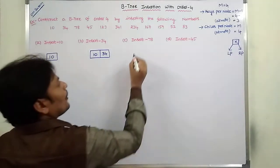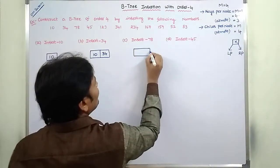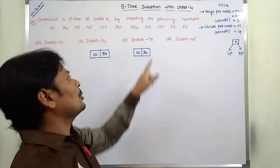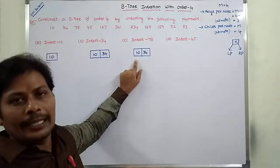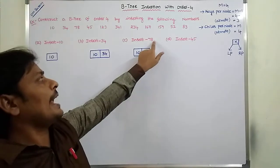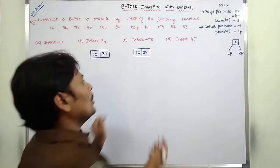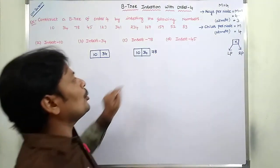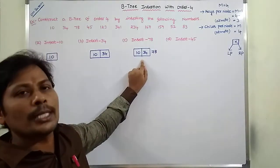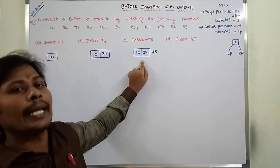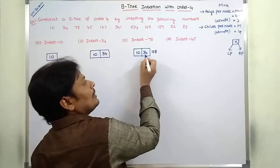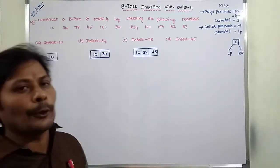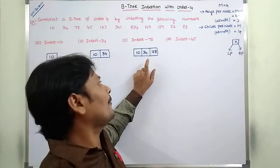Next, insert 78. Before inserting 78, the node contains 10 and 34. We compare 78 with 10 — greater, go right. Compare with 34 — greater, so 78 is located to the right of 34. There is still room in the node for a third key element, so 78 is inserted to the right of 34. After inserting 78, the node contains 10, 34, and 78.